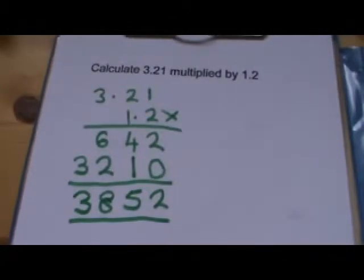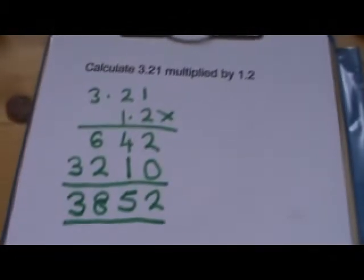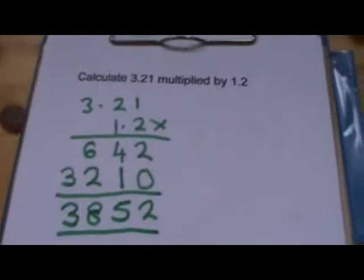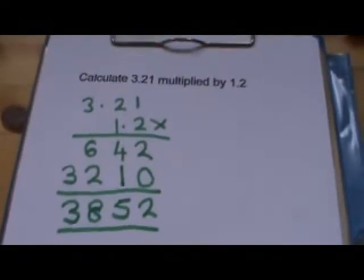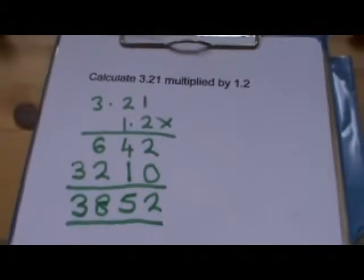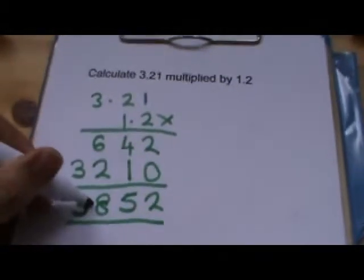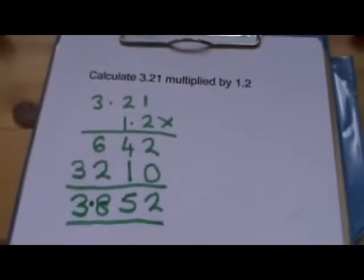So remember, we're expecting an answer that is roughly 3. We know it's going to be more than 3 because to get 3 times 1 we rounded both the numbers down. So our answer must be 3.825.